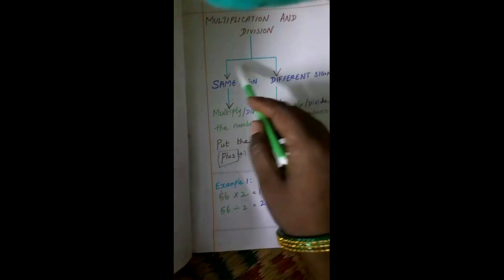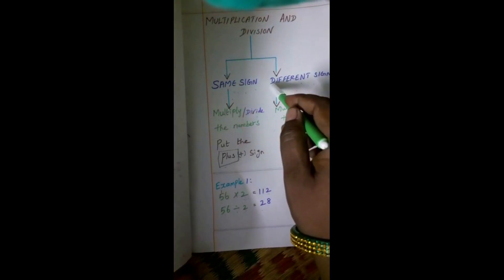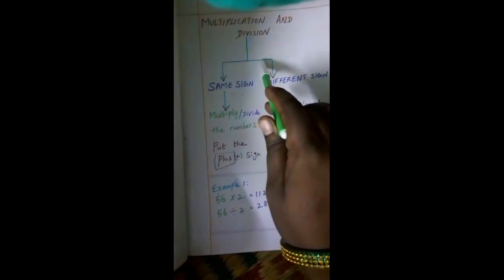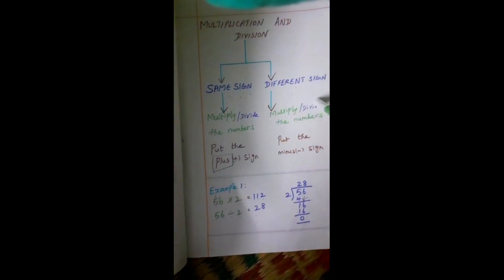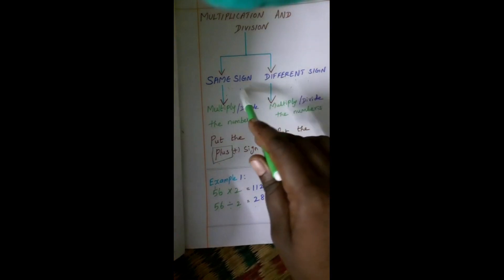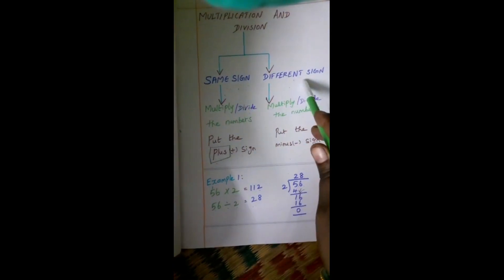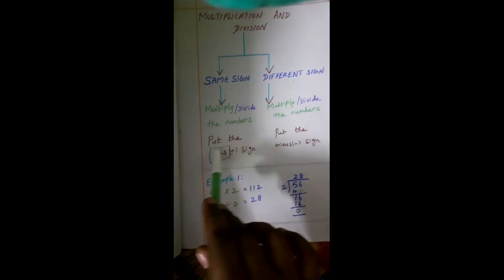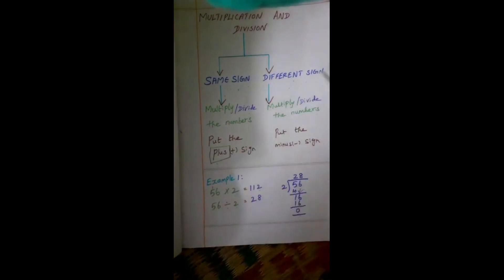Next, we move on to multiplication and division. This flowchart explains sign clarification of multiplication and division. Whatever sum is given, first we check whether it contains the same sign or a different sign. If the sum contains the same sign, you will put the plus sign. If the sum contains a different sign, you will put the minus sign. Then you multiply or divide as required.